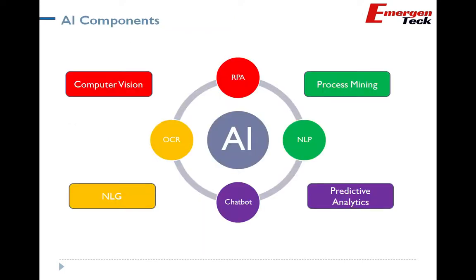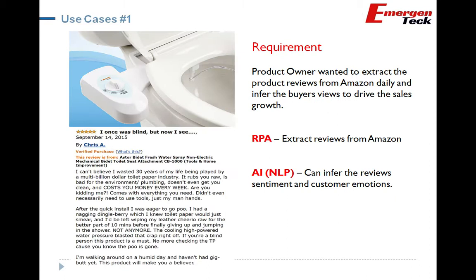Let's quickly understand the AI components. RPA is not itself an AI component but is part of the AI ecosystem. Number 2 is NLP — Natural Language Processing. Number 3 is Chatbot. Number 4 is OCR — Optical Character Recognition. Also part of this space are process mining (process discovery), predictive analytics — a core component of machine learning for forecasting — Natural Language Generation, and one very powerful AI component: Computer Vision. These are not the only components; there are many more, but this gives an overview of the key AI components.